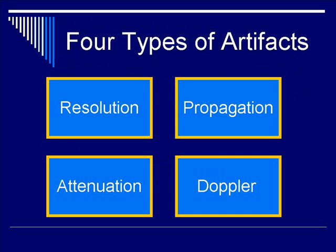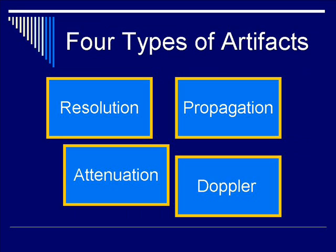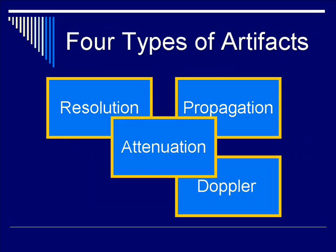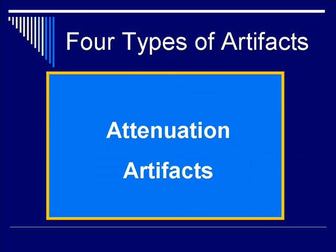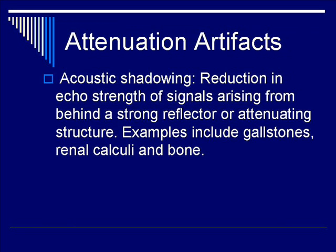We're now going to talk about the third category of artifacts from this lecture, namely attenuation artifacts. There are many subcategories of attenuation artifacts. The first one is acoustic shadowing, which is an important type of artifact that describes a reduction in the echo strength of signals arising from behind a strong reflector or attenuating structure. Examples include gallstones, renal calculi, bone, and even gas. We'll go through three broad categories of different types of acoustic shadowing, ranging from the strong to the weak.